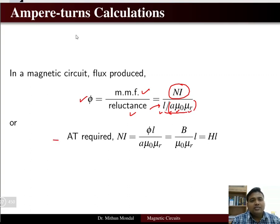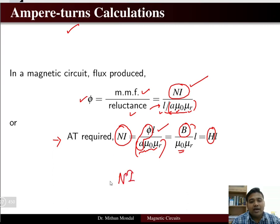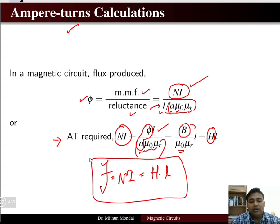To determine the required ampere turn, we rearrange the equation: NI equals flux multiplied by length divided by area times permeability. Since flux per unit area gives flux density B, we get B divided by µ0µr times length. Since B/µ = H (the magnetic field intensity), the final result is that MMF, NI, equals H times the length of the magnetic path.